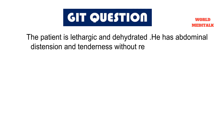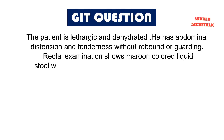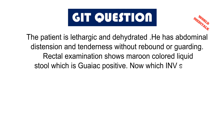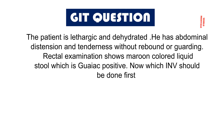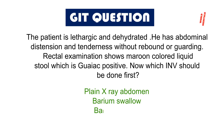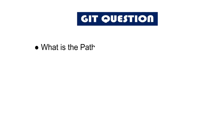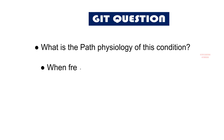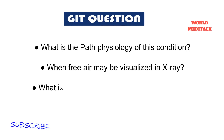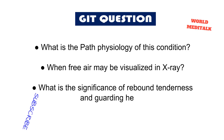Tenderness without rebound and guarding. Rectal examination shows maroon colored liquid stool. Which investigation should be done first: plain X-ray abdomen, barium swallow, barium enema, or colonoscopy? If you have already guessed the answer — what is the pathophysiology of this condition? When may free air be visualized on X-ray? What is the significance of rebound tenderness and guarding here?